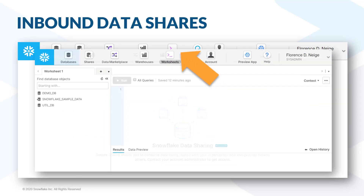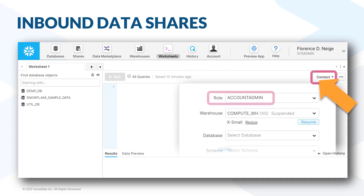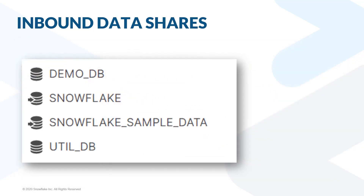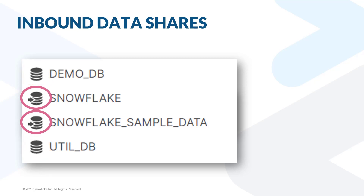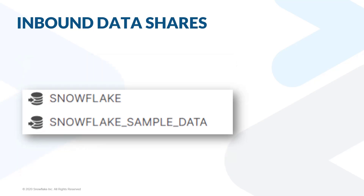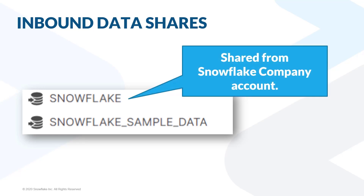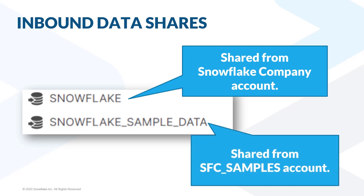If we return to the worksheets area and change the worksheet role to account admin, then refresh the navigation pane, we'll see four databases instead of three. You might notice that two of the four databases have a very simple database symbol, but two of them have a symbol that includes both a database and an arrow. The arrow symbol is there to signify that these databases do not live within your account — they're actually being stored in someone else's Snowflake account and being shared with you. We call this an inbound share.